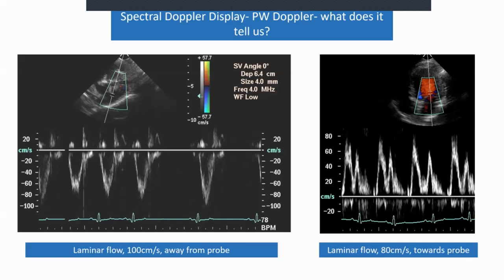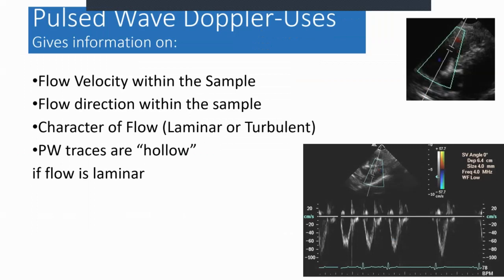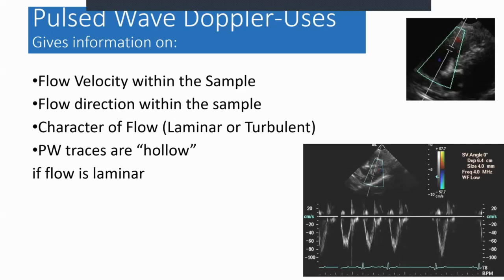This is mitral inflow from a left apical four chamber view — flow heading towards and through the mitral valve the right way, from left atrium to left ventricle, above the line at about 80 centimetres per second — that's the E wave — heading towards the probe and laminar. Pulse wave Doppler gives information on flow velocity within the sample, direction (above the line is towards, below is away), and the character of flow. If laminar, you get a hollow tracing; if turbulent, the whole tracing is filled in.